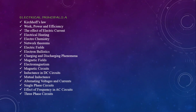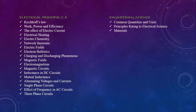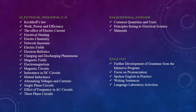Electrical Principles topics include Thévenin's theorem, current flow, work, power and efficiency, the effect of electric current, electrical heating, electrochemistry, network theorems, electric fields, electron ballistics, charging and discharging phenomena, magnetic field, electromagnetism, magnetic circuit, inductance in DC circuits, mutual inductance, alternating voltage and current, single-phase circuits, effect of frequency in AC circuits, and three-phase circuits. Engineering Science covers common quantities and fundamental principles related to electrical science and materials.